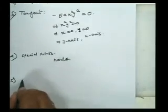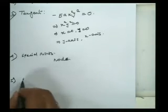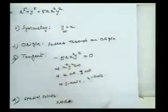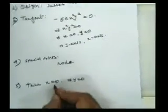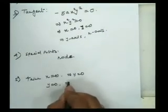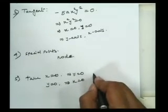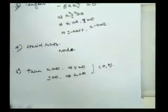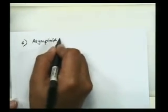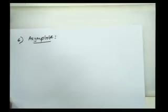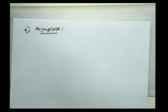The point where tangents meet is called a node. Intersection with coordinate axis: by taking x = 0 in the equation, we get y = 0, and if we take y = 0 we get x = 0. So (0,0) is the only intersection with the coordinate axes. For asymptotes: there is no asymptote parallel to the x-axis or y-axis, so we need to find the oblique asymptote.